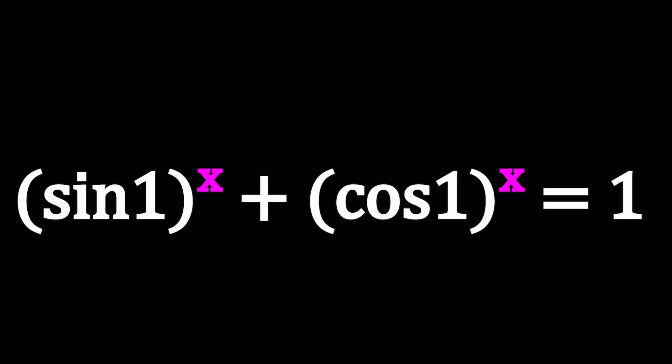We have sine 1 to the power x plus cosine 1 to the power x equals 1. Now, sine 1 and cosine 1 is in radians. Obviously, 1 is not in degrees. It's in radians. That's important, right? Great. So let's go ahead and see how we can solve a problem like this.